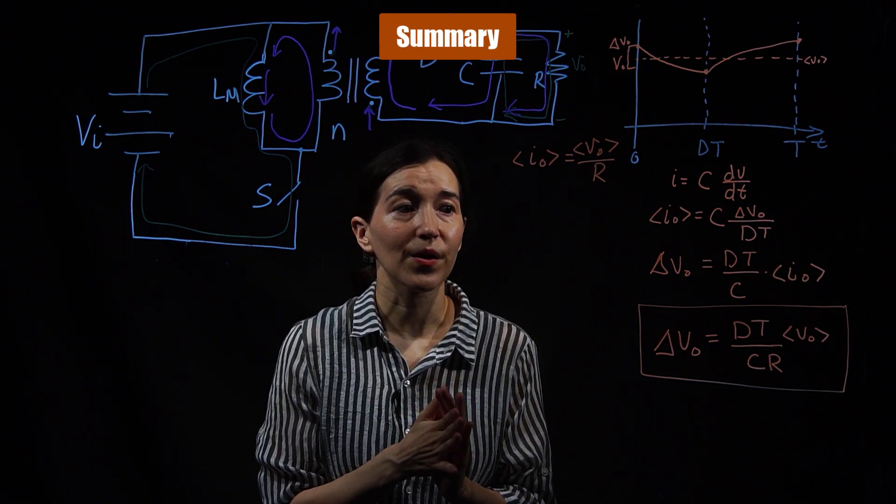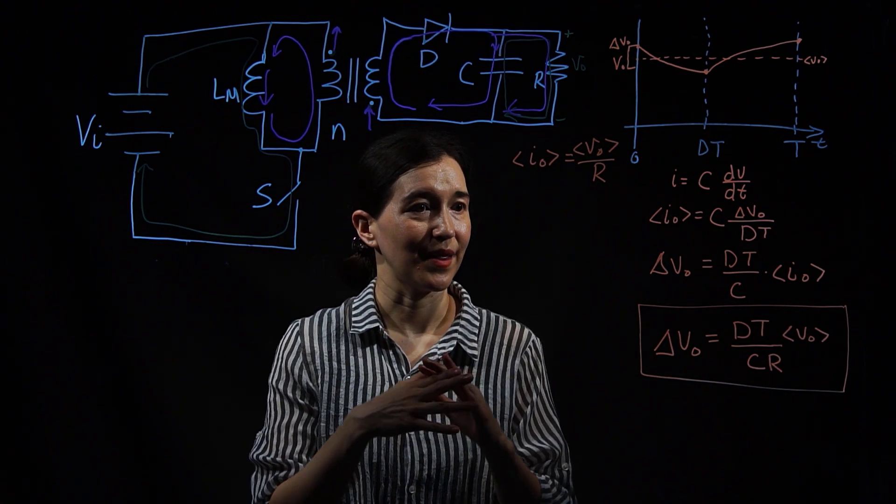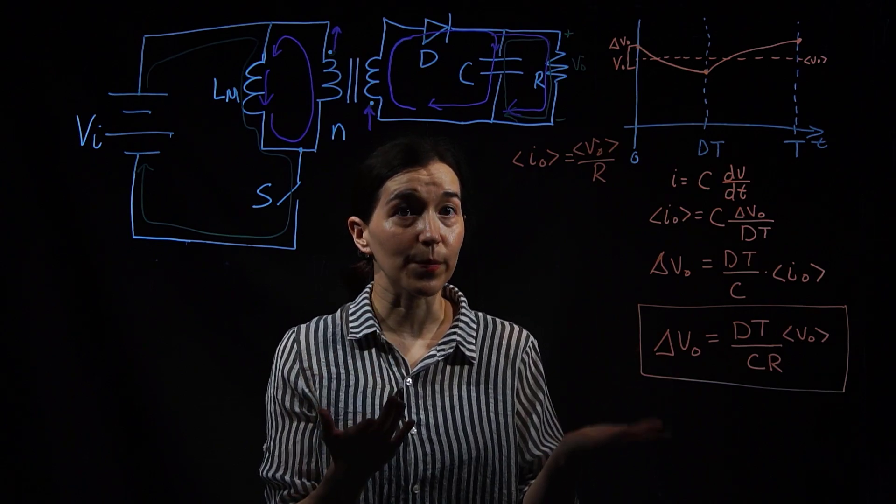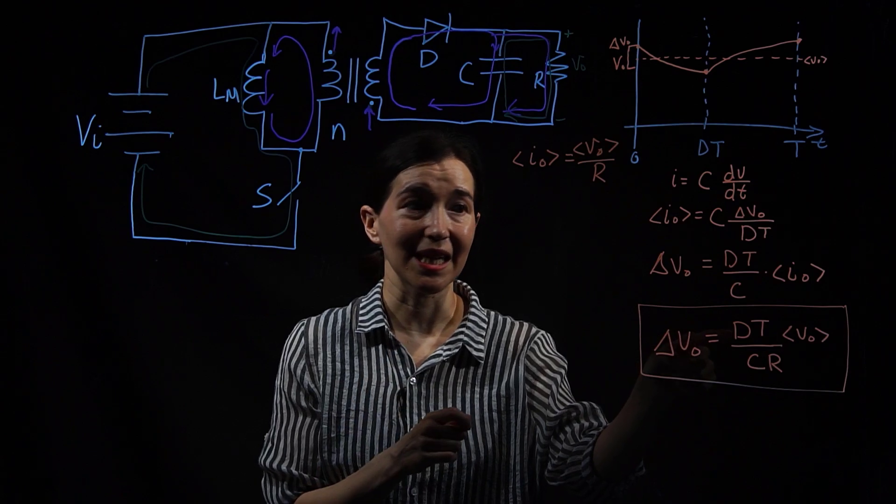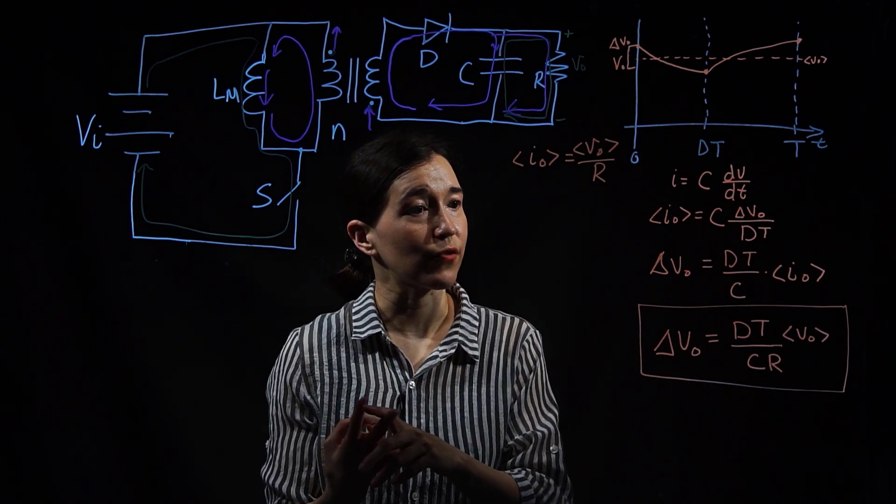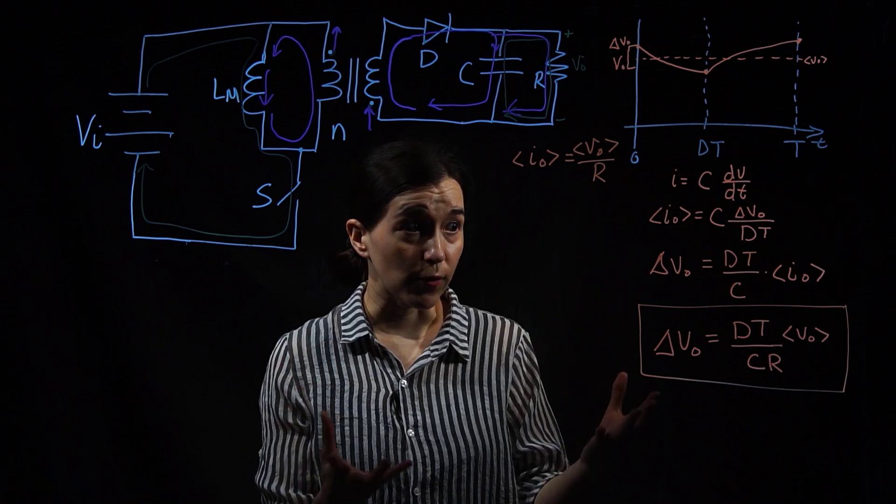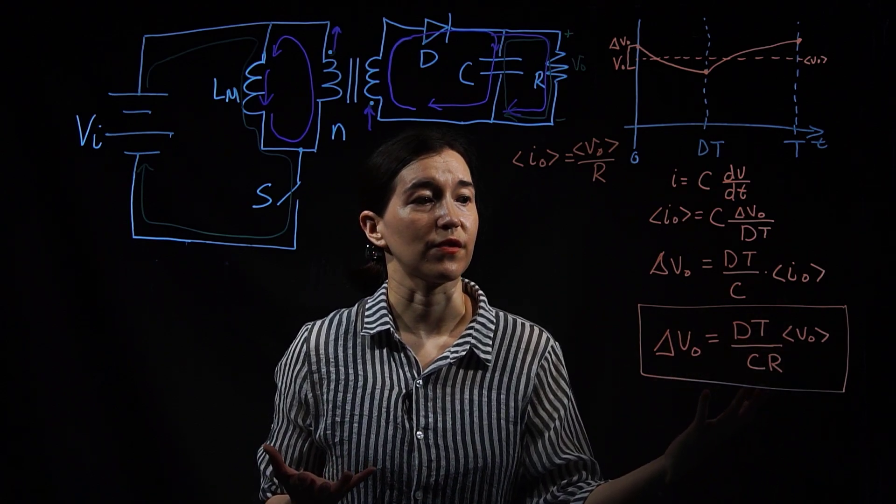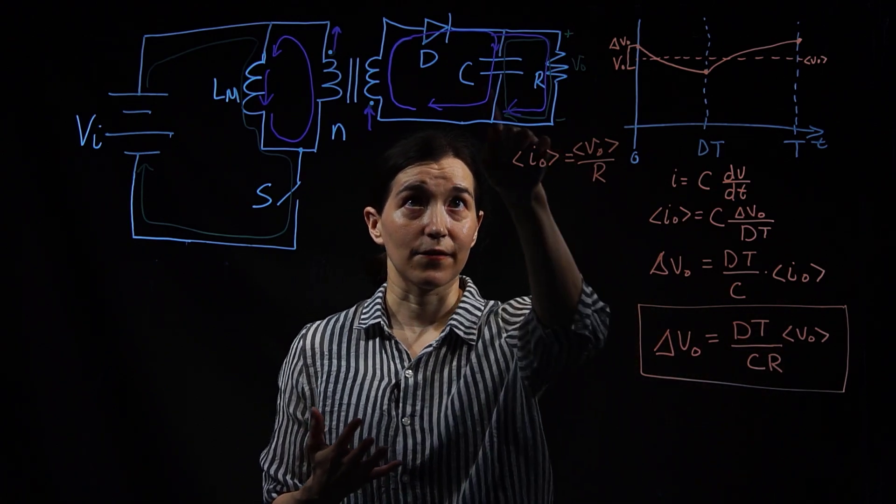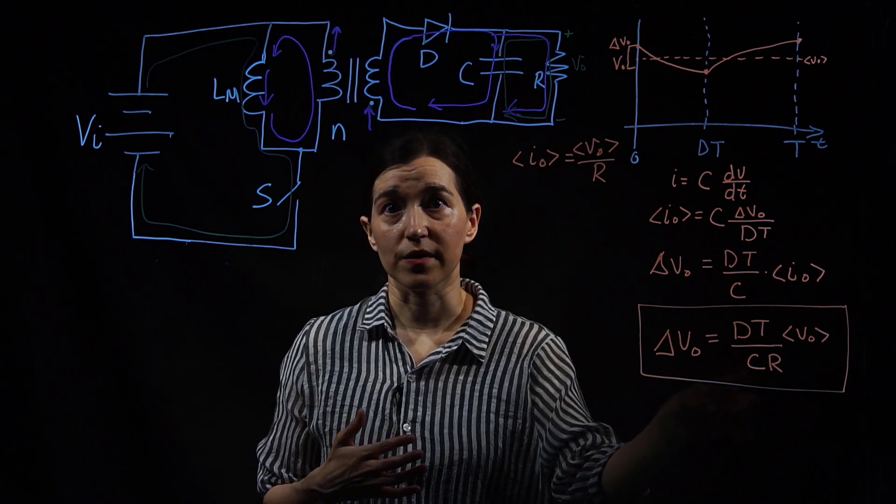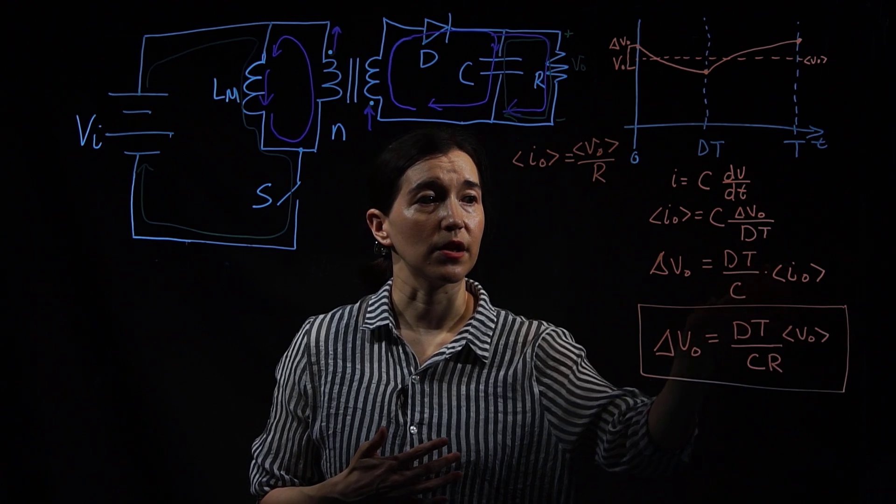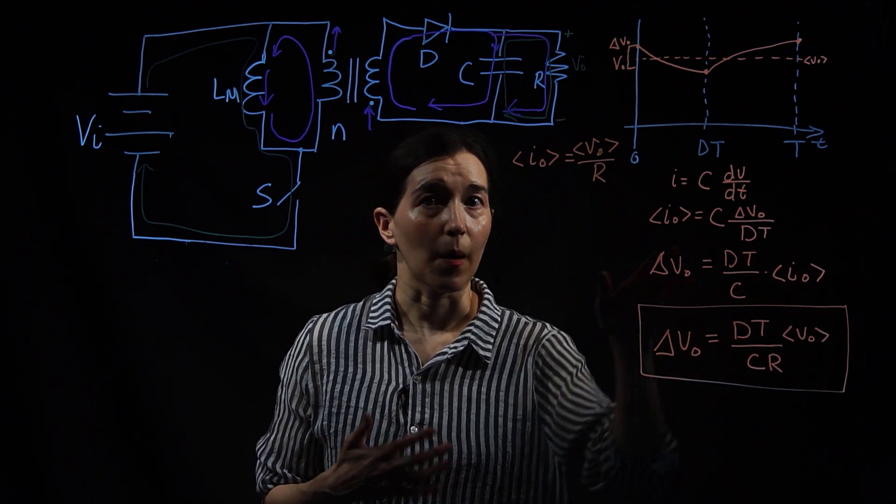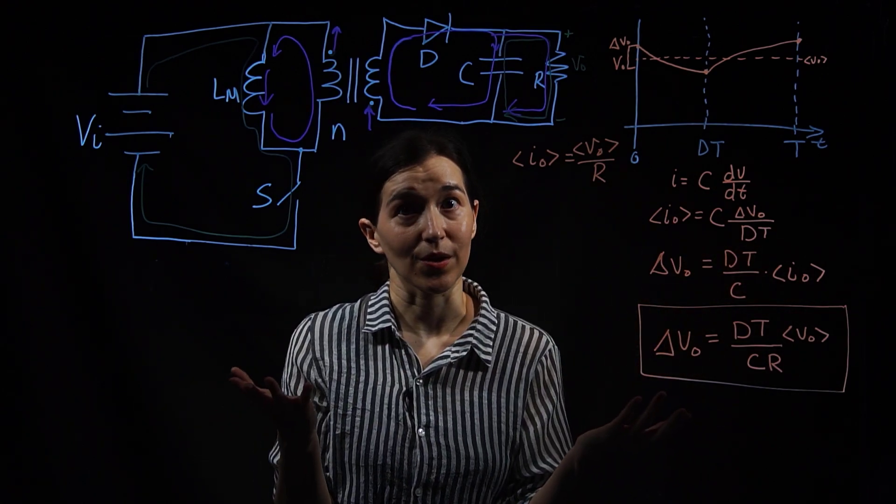In summary, all that you need for the output voltage ripple of a flyback converter is the duty ratio d, the time period or switching frequency T, the output voltage, the average voltage value, the capacitance of your output capacitor, and the resistance at your load. If you happen to already know the average current, you can just put that into this above equation and you can solve it as well.